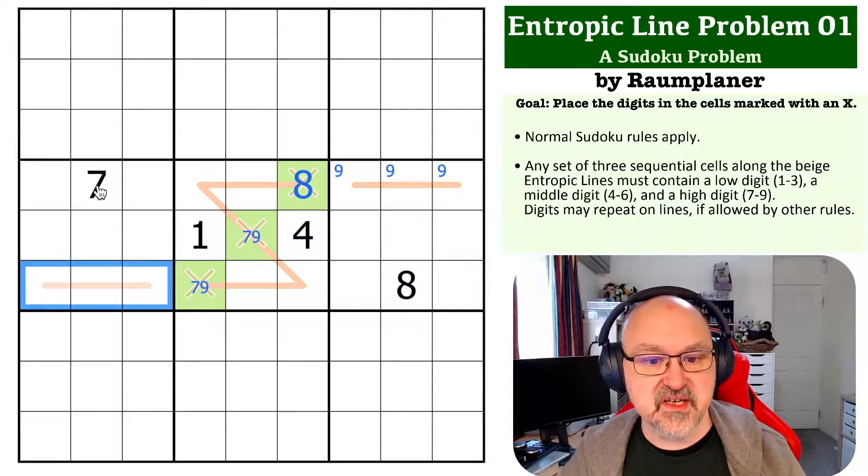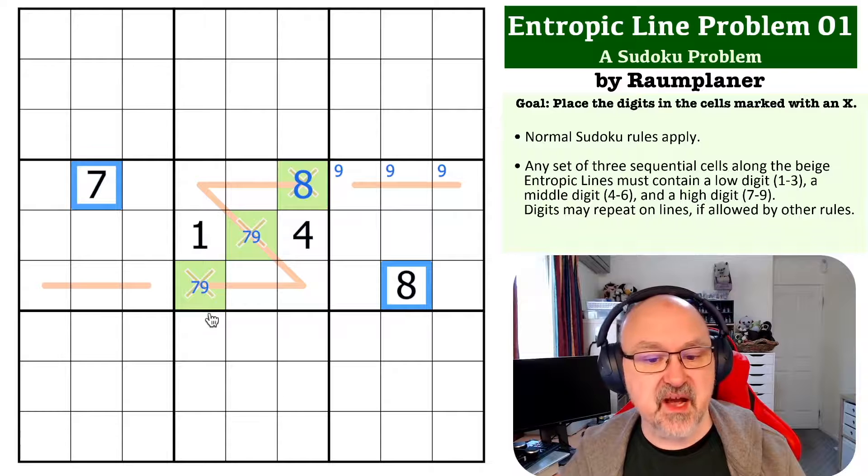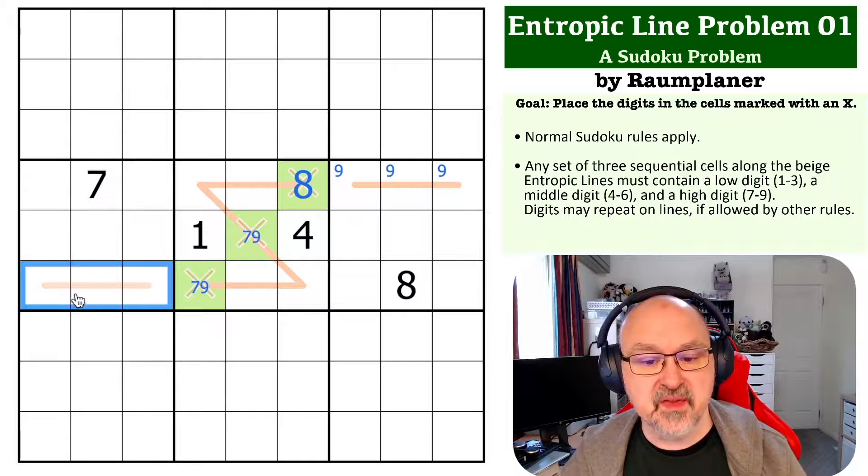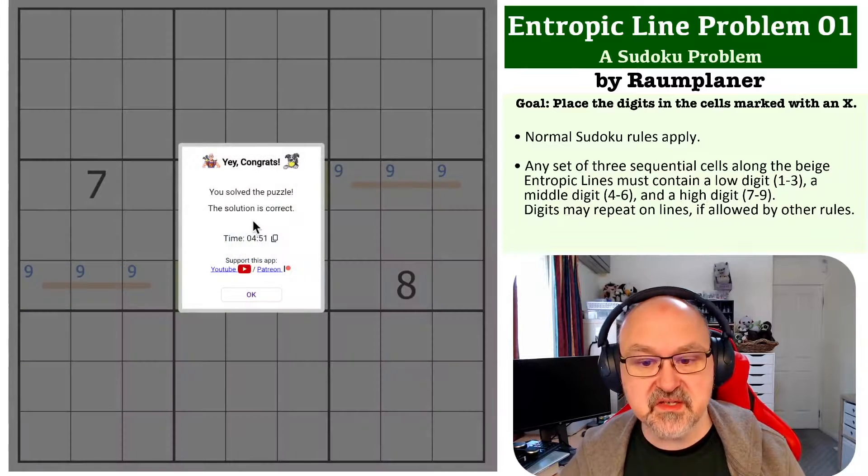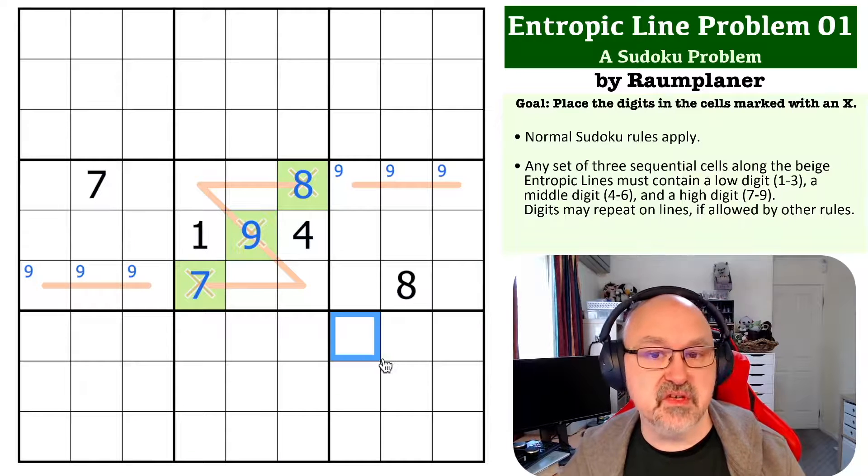This line also needs a high digit, and it sees the same 7 and 8 in its entirety. Because in the same box it sees the 7, and in the same row it sees the 8, there must be a 9 here. So this becomes the 7, this becomes the 9, and that is the solution to the problem.